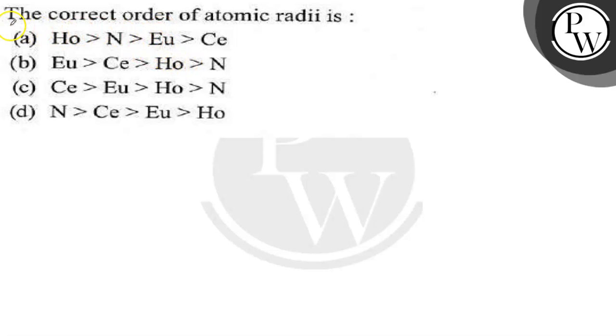So let's go through this question. The question says the correct order of atomic radii is. To solve this question, we'll consider the metallic radii graph with respect to atomic number.